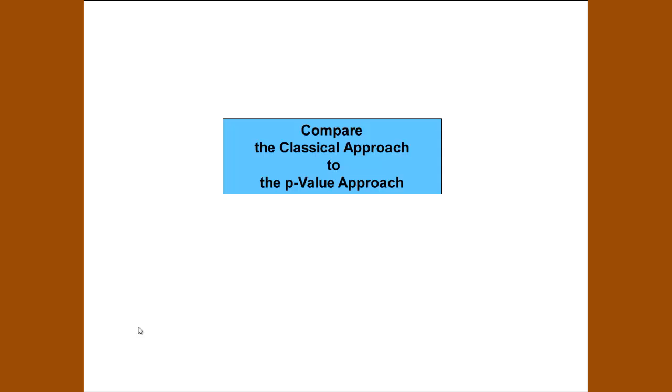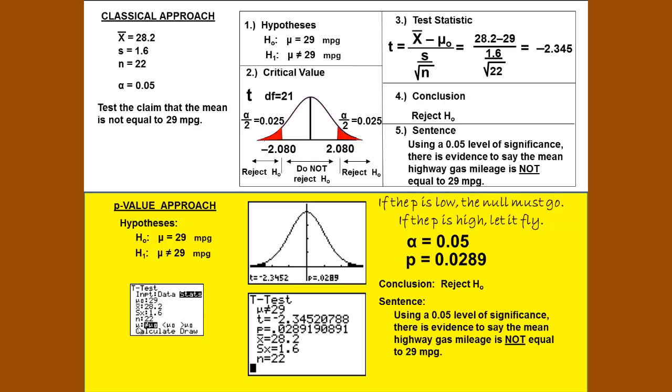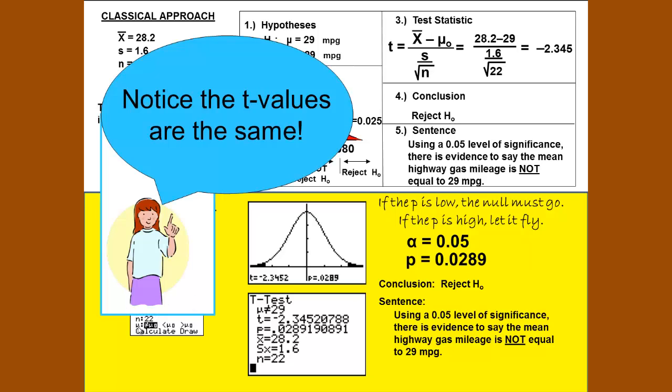Now let's compare the classical approach to the p-value approach. Here are the results copied from previous screens. Same results. Notice that the t-values are the same. We get negative 2.345 in the classical approach using the formula. The calculator screen gives us that same value. This would be a great way to check if you are required to do the classical approach but need to check your answer and want to check your answer using the calculator.